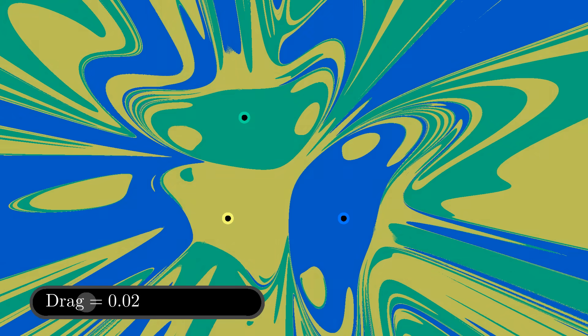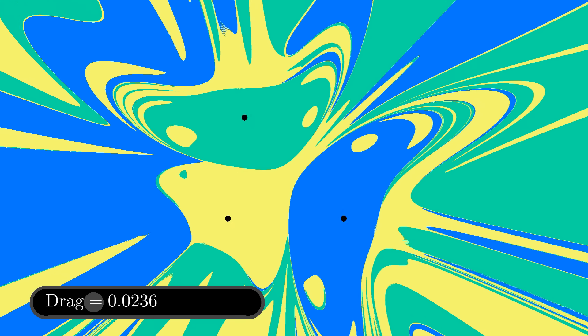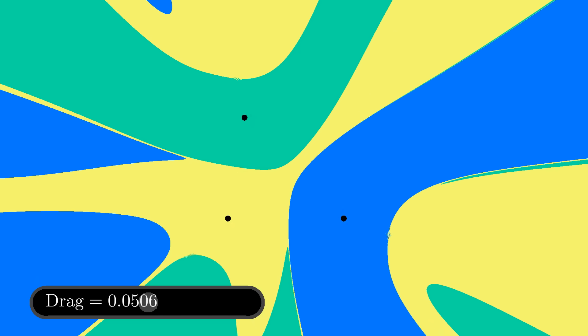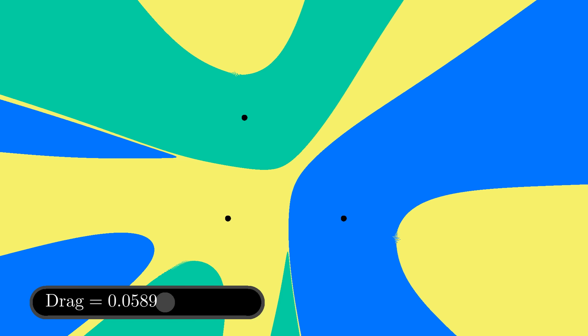Let's mess around with this parameter and see what happens. Check that out! Perhaps unsurprisingly, the greater the drag, the less complicated the orbital patterns are, because each particle will just slowly march to the nearest attractor.